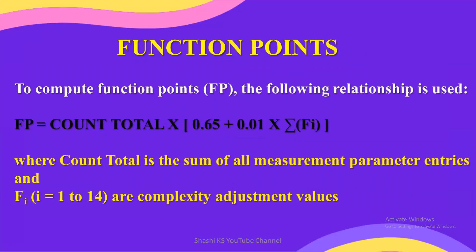The next step is to compute the function points using an empirical relationship. The formula is: Function Points = Count Total × (0.65 + 0.01 × ΣFi), where ΣFi denotes the summation of complexity adjustment values. We have 14 complexity adjustment values in total. Count total is the value calculated previously using the five direct measurement parameters.